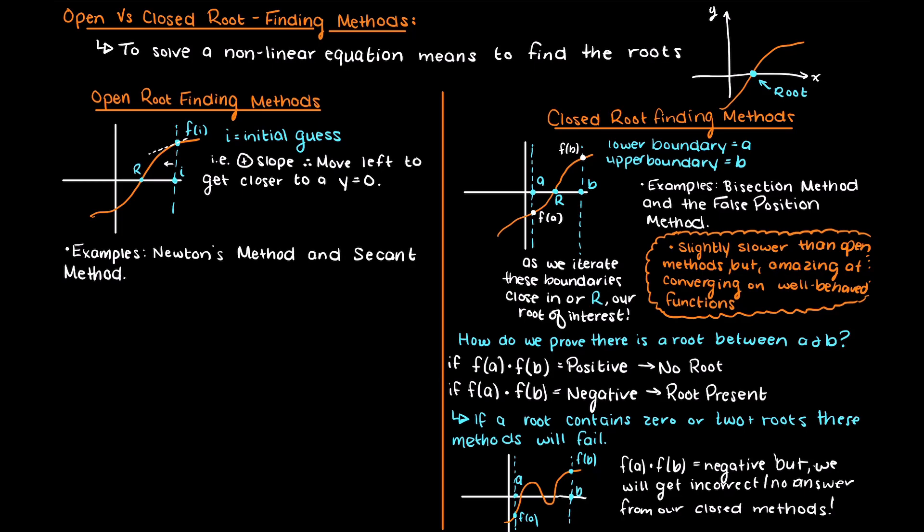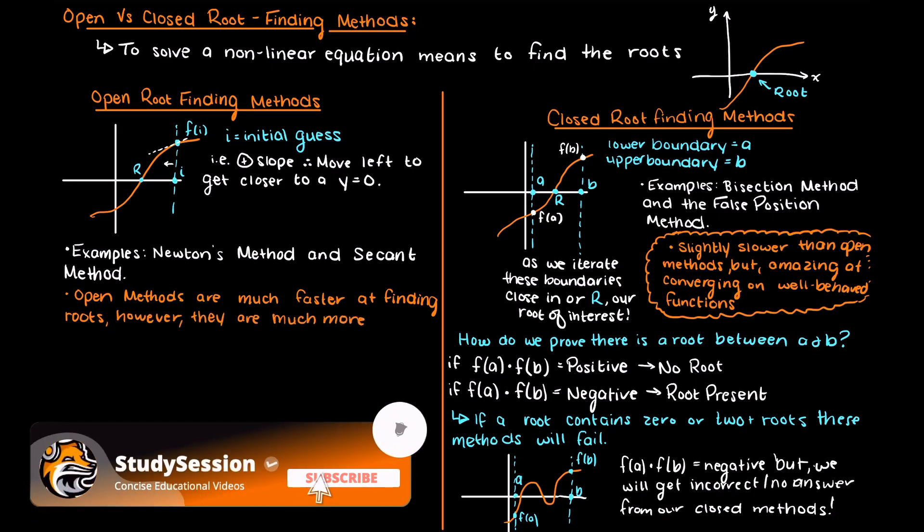A large benefit to open methods over closed methods is that open methods are much faster at finding roots. However,